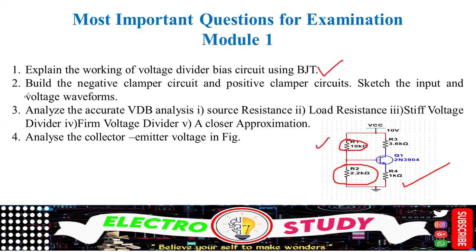The second question is: build the negative clamper circuit and positive clamper circuit. Diagram is mandatory. You should know what a clipper and clamper are. A clamper can be done using a capacitor. Sketch the input and output waveforms — it is a very simple question. There are different types of negative clamper; try to follow up the configurations. This question will be asked for 10 marks — 5 marks for positive clamper and 5 marks for negative clamper.